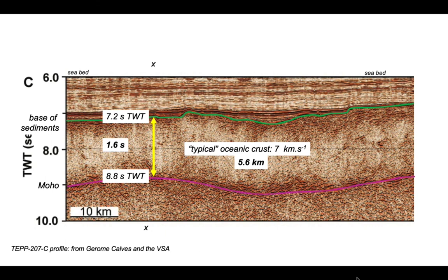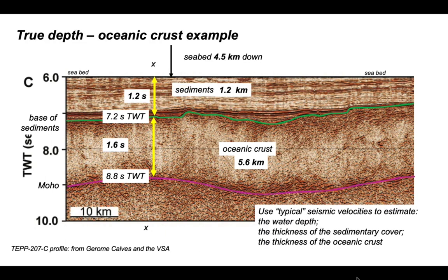To summarize, putting all these values together from this simple depth conversion: the seabed is 4.5 kilometers down; beneath the seabed there's about 1.2 kilometers of sediments; and this sedimentary cover overlies a basement of oceanic crust that is 5.6 kilometers thick. A simple illustration of using seismic travel times and interval velocities to work out the thicknesses in meters or kilometers of particular units on seismic profiles.